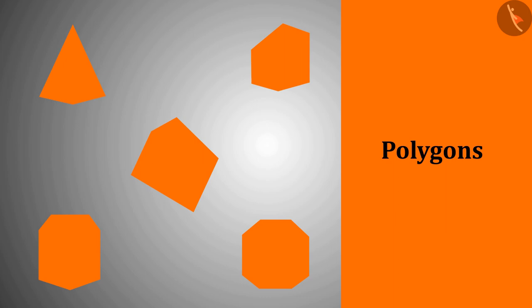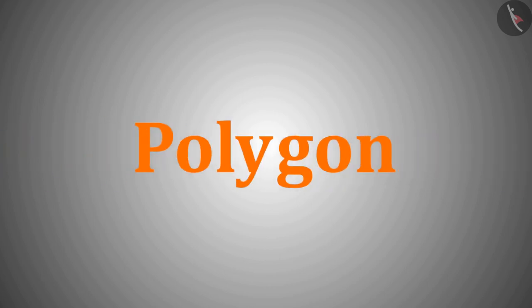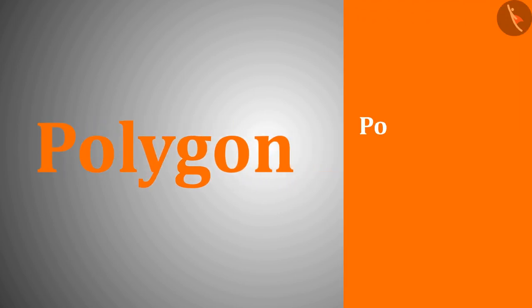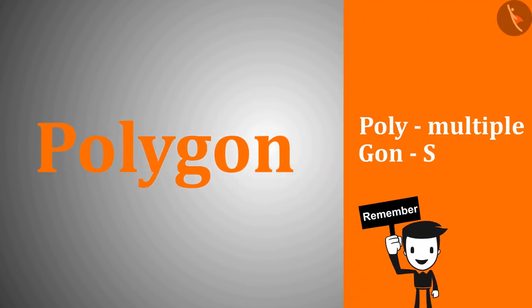As we can see, the word polygon is made up of two words: poly and gon, where poly means multiple and gon means side or angles. Therefore, the figures which have many sides are called polygons.